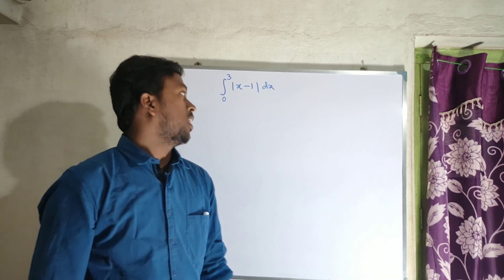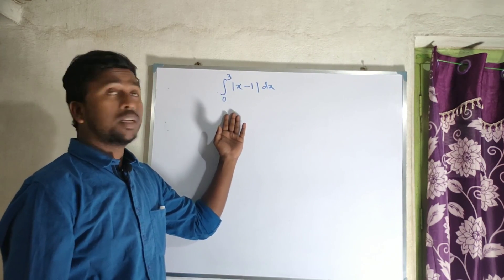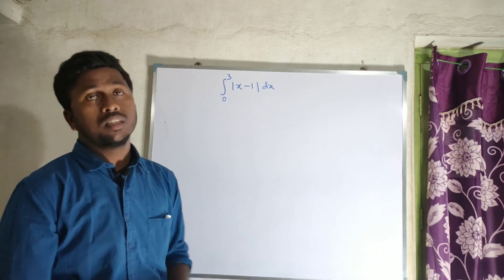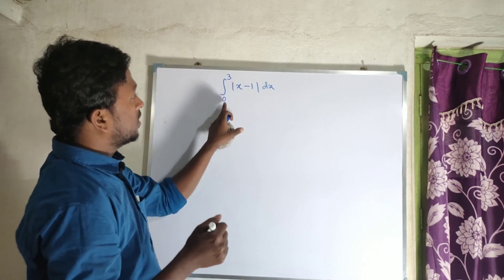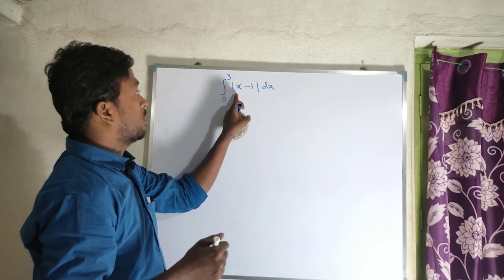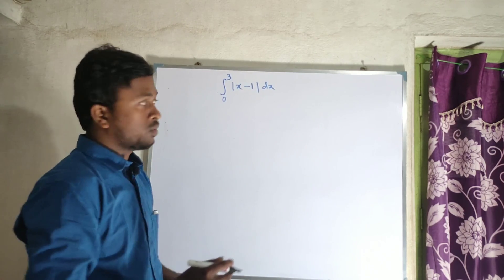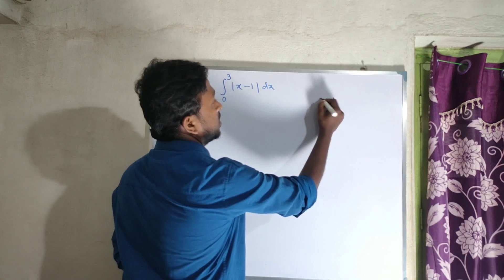Hi students, welcome to my channel. I am going to solve a special type of integration problem involving modulus. So first of all, the problem is integration from 0 to 3 of mod of x minus 1 dx. First of all, I need to use the definition of modulus.